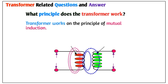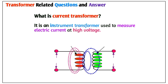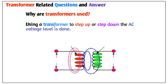Q3: What principle does the transformer work on? The transformer works on the principle of mutual induction. Q4: What is a current transformer? It is an instrument transformer used to measure electrical current at high voltage. Q5: Why are transformers used? Using a transformer to step up or step down the AC voltage level is done.